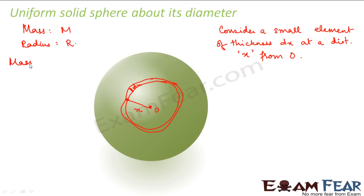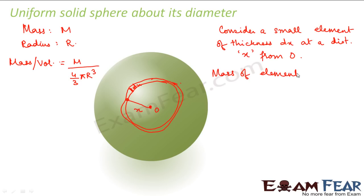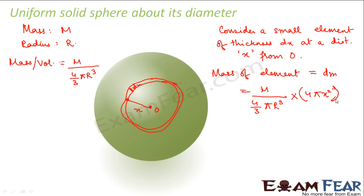We calculate the mass per unit volume of the sphere, which is M divided by (4/3 π R³). The mass of the small element dm equals mass per unit volume multiplied by the volume of the small element. The volume of the small element is its area 4πx² multiplied by thickness dx, since this small element is a thin shell and the surface area of a sphere is 4πx².